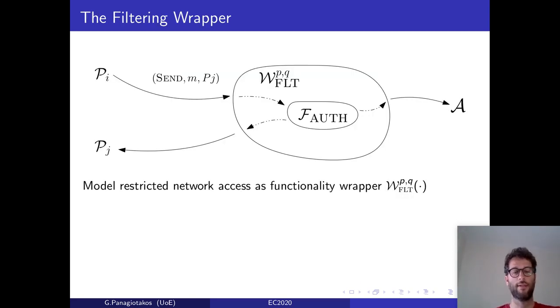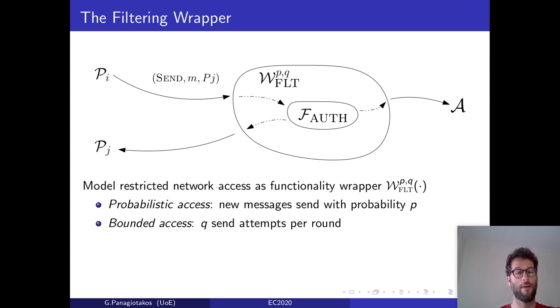In more detail, we model restricted network access as a functionality wrapper. This wrapper has three properties. First, probabilistic access, that is, a new message is sent with some probability p. Second, bounded access, that is, at most q send attempts are allowed per round. Finally, free forwarding, that is, if I receive a message or have sent a message before, then I can forward it to any other party for free. While this filtering wrapper can wrap different types of networks, in this work, we will focus on authenticated ones.